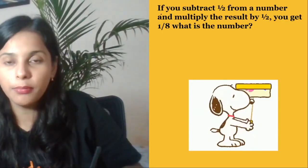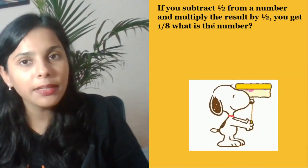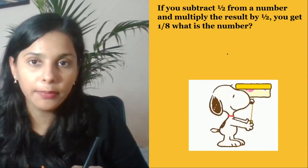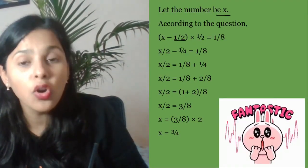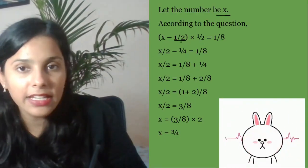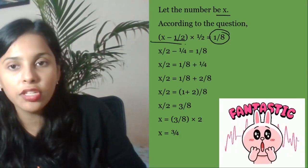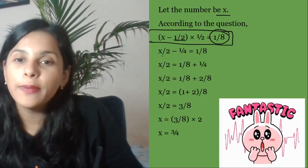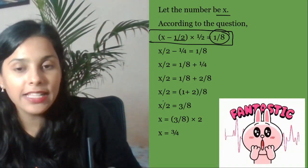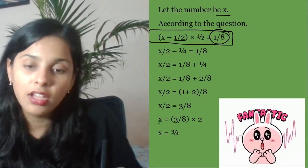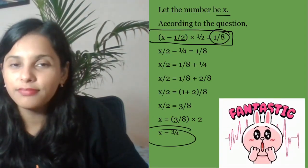Let's do question number two. If you subtract half from a number and multiply the result by half, you get one by eight. What is the number? So let the number be x. Question says you subtract half and also multiply by half. So (x minus 1/2) times 1/2 equals 1/8. This is what the question told you. So x/2 minus 1/4 is equal to 1/8. Now solving: x/2 equals 1/8 plus 1/4. Taking LCM, you get x/2 equals 3/8. Now x will be equal to - take 2 to RHS - you get 3/4.